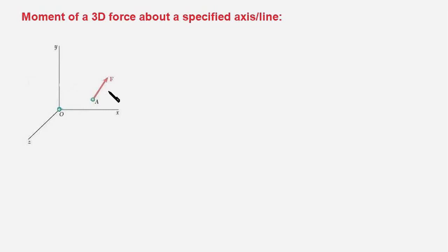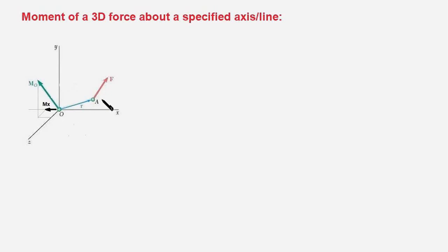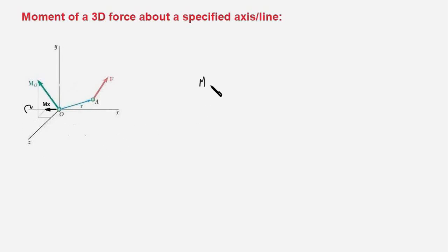Let's say there is a force F in 3D space and we have been asked to find out its moment about the x-axis. What we do is we pick up any point on this x-axis — for convenience we take point O — and we compute the moment of this force about point O. The moment vector Mo has an x-component Mx, which is the moment about the x-axis and gives an idea about rotation about the x-axis.